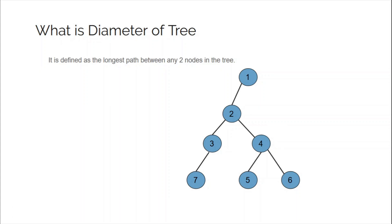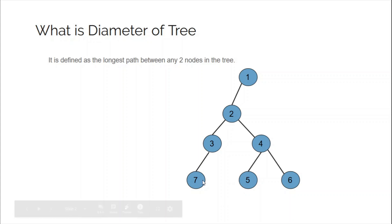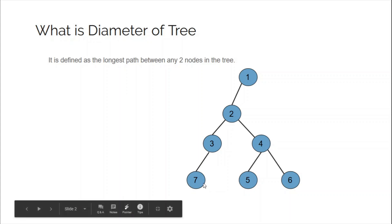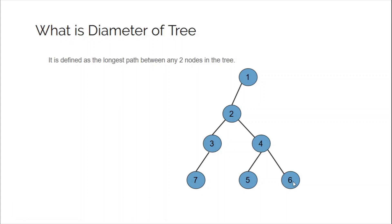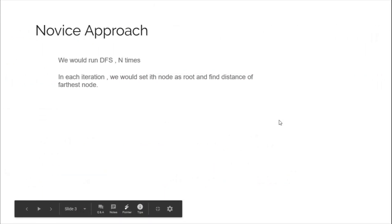You can consider 5 as one endpoint of the diameter, then 7 would be the other end. You can consider 6 as one endpoint of the diameter, then 7 would be the other end. If you consider 7 as one endpoint, then 5 and 6 would be the other endpoints. So 5, 6, and 7 are all candidate endpoints of the diameter. The question is: how can you calculate the diameter of the tree?